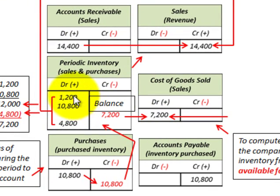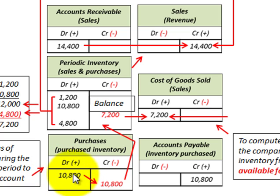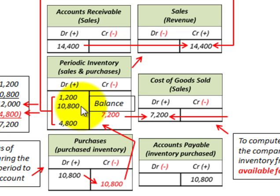When using the periodic inventory system, you need to know your beginning inventory, your ending inventory, and the purchases for the period. Purchases are recorded in the special purchases account and closed out at the end of the period into the periodic inventory account. Knowing the beginning inventory, purchases for the period, and ending inventory, you derive the balancing amount that represents the reduction in the inventory account — which is your cost of goods sold.